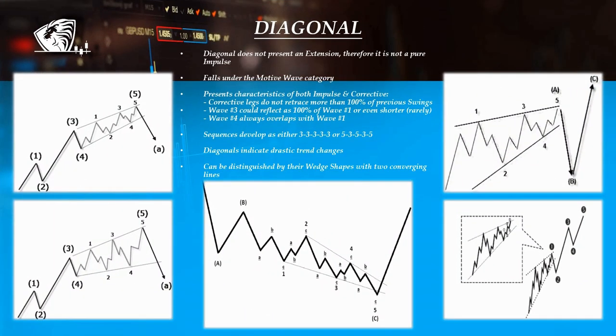The diagonal does not present an extension, therefore it is not an impulse. However, it is a motive wave, but a special one. This structure presents the characteristics of an impulse where corrective legs do not retrace more than 100% of the previous moves in favor of the main trend, but the other two rules are broken. Wave 3 could reflect as the shortest swing, rarely, and wave 4 always overlaps with wave 1.